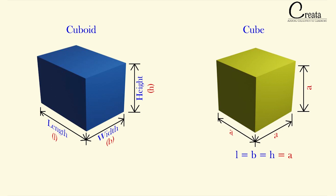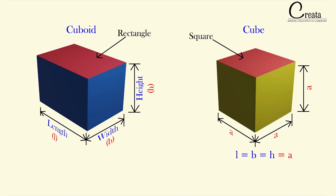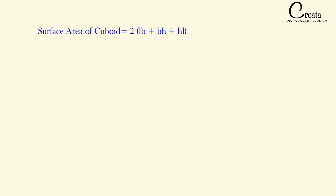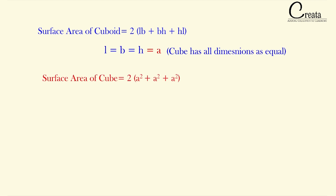All other things are similar to the cuboid — the formula of the surface area, lateral surface area, and volume — we just replace L, B, and H with A. In the cuboid the base is a rectangle; in the cube the base is a square. All 6 faces of a cube are squares with dimension A. Using the surface area formula of the cuboid and replacing L, B, H with A, we get the surface area of the cube as 6A².